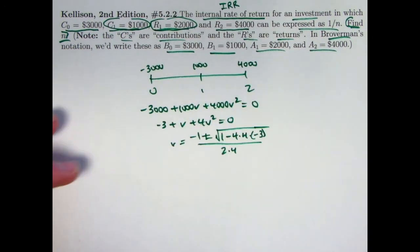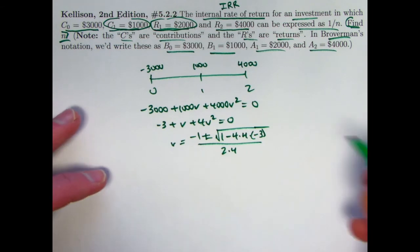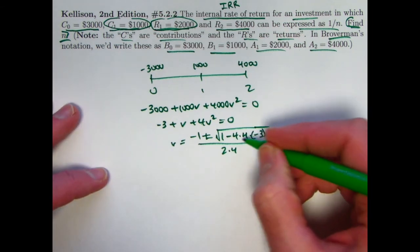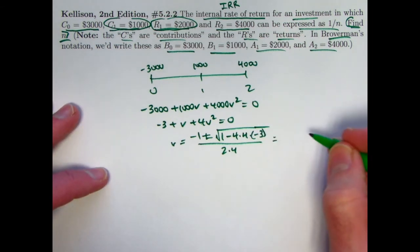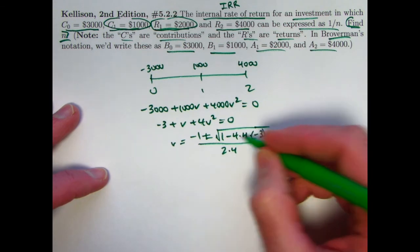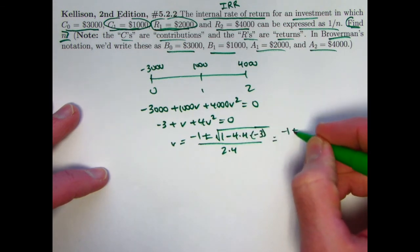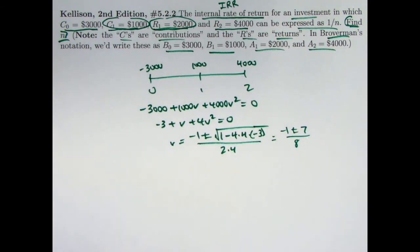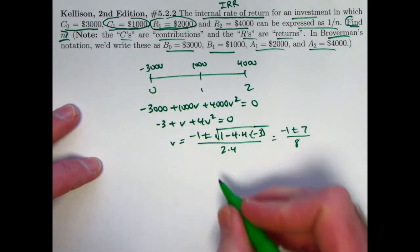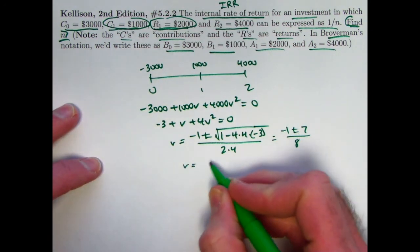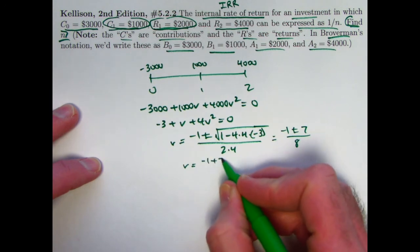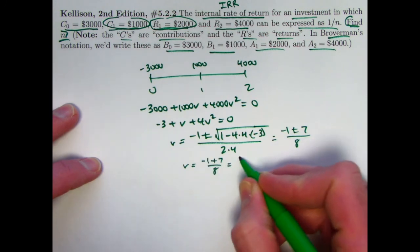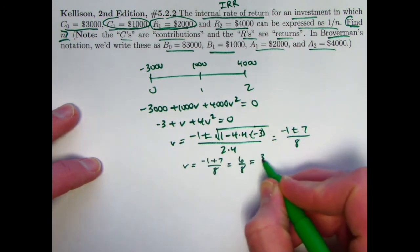The coefficient of the squared term there is 4. 4 times 4 times negative 3 is negative 48, but we're subtracting that. So we get negative 1 plus or minus square root of 49, which is 7, divided by 8. We do have two answers for V, but only one makes real life sense. So we take the positive. V is going to be negative 1 plus 7 over 8, 6 eighths or 3 fourths.